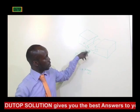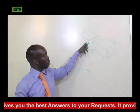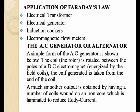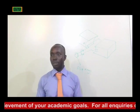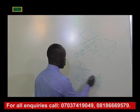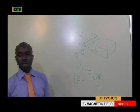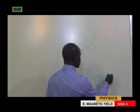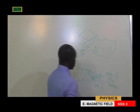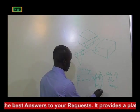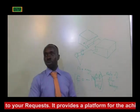As the coil rotates, it cuts through the lines of magnetic flux, producing an EMF. A smoother output is obtained by having a number of coils mounted on a laminated iron core to reduce eddy currents. The EMF generated can be given as: EMF = −N dΦ/dt, where N is the number of turns and dΦ/dt is the rate of change of flux linkage.